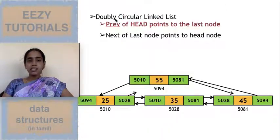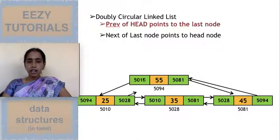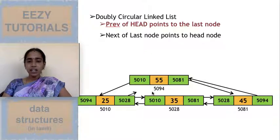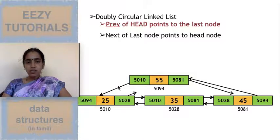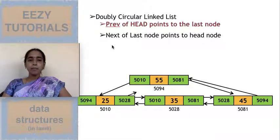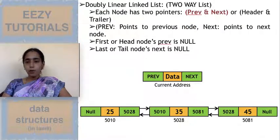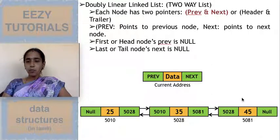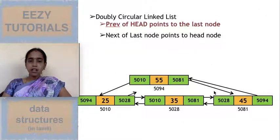The last type is the doubly circular linked list. In this example, the first node's previous part holds the last node's address, and the last node's next part holds the first node's address — so the first and last nodes hold each other's addresses. This is the doubly circular linked list. You have circular access, whereas in the linear versions there is a stop at the beginning and end. In the circular version you can circularly access and traverse all elements. These are the four types of linked list.